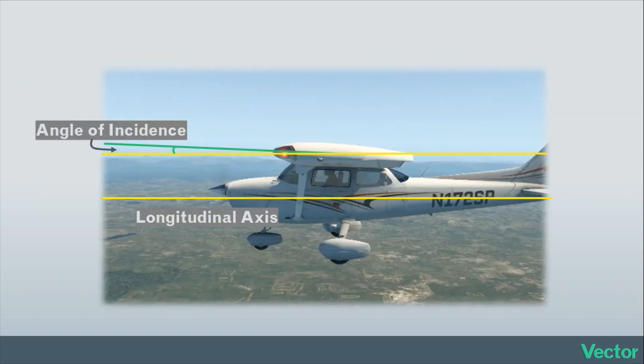The angle of incidence is essentially the angle at which the airfoil is attached to the fuselage. This we cannot change. This is a fixed design feature of the airplane. It's just the angle between the cord line and the line parallel to the longitudinal axis.